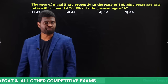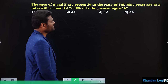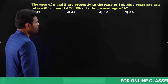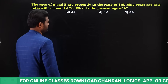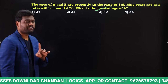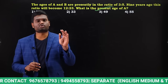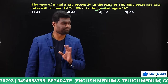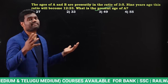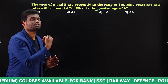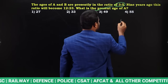Here we have a question: the ages of A and B are presently in the ratio 3:5. Nine years ago this ratio became 12:23. What is the present age of A? Now, most students will take present ages as 3x and 5x.